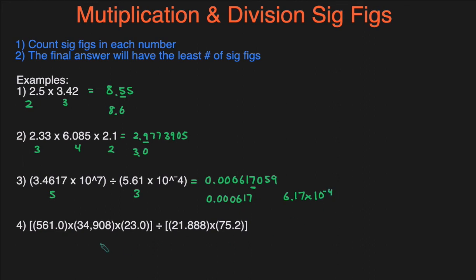Okay, last example. We have a lot more numbers here, but it's the same process. We multiply these three numbers together and then divide by the product of these two numbers. When you enter that into the calculator, you should get 273647.6632. Then let's take a look at the number of sig figs in each of these numbers.